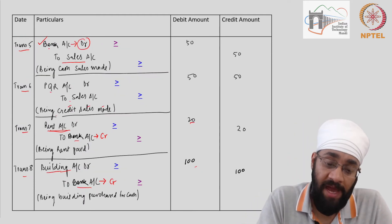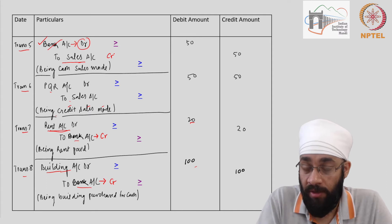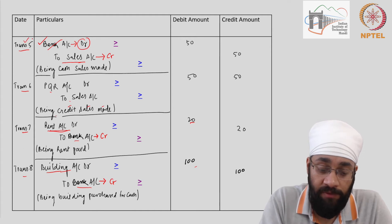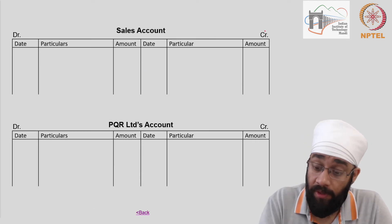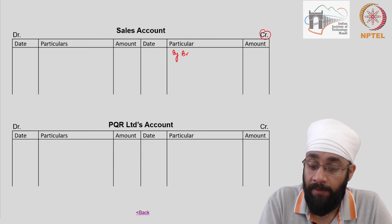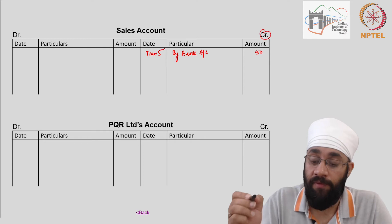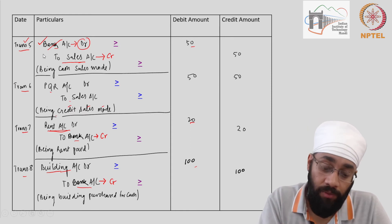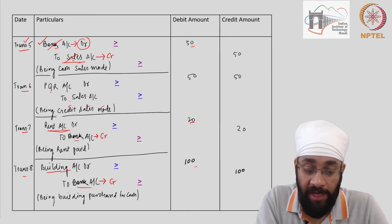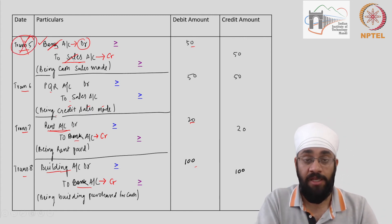Transaction 4 has been posted to both accounts — purchase account and ABC account — so this is done. Moving forward, transaction 5 has been posted in the bank account already, but not in the sales account. Sales account is being credited, so I go to the credit side of sales account and write 'By Bank Account, 50'. Transaction 5 has now been posted into sales account. Crossing it off — both accounts done.